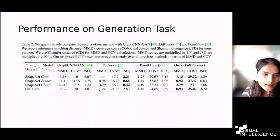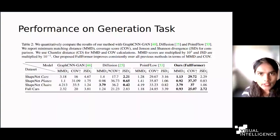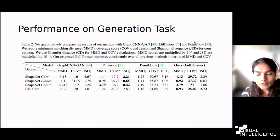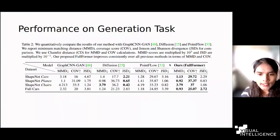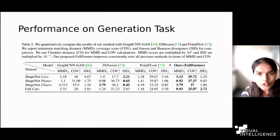The quantitative results show MMD, coverage, and JSD metrics compared against Graph-CNN, GAN-fusion, and other baselines. Our method performs better in MMD and coverage, and also in FullCast JSD, showing that it generates diverse, realistic samples that match the distribution of the learned data.